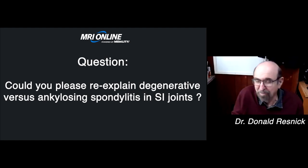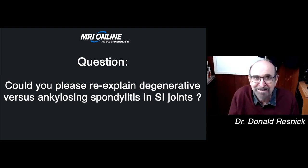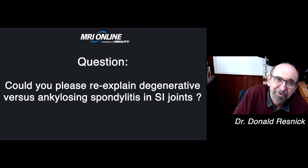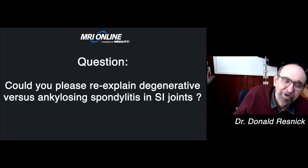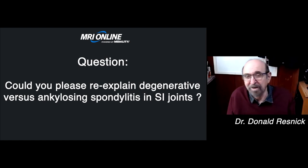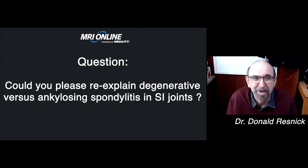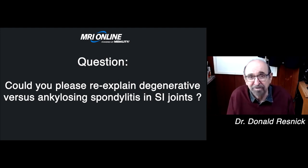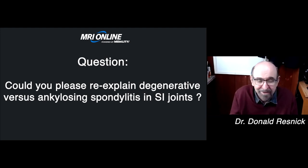I did not talk about osteitis condensans ilii — classically a disease of multiparous women, rarely occurring in men — where you get very well-defined triangular sclerosis on the ileal aspect with little or no sacral involvement. Sometimes you run into a differential with sacroiliitis. And one other point: if you read the recent literature on the value of MR in diagnosing sacroiliitis, you'll see many examples of other diseases that on MR can simulate the sacroiliitis of ankylosing spondylitis. For example, post-pregnancy mechanical changes in the sacroiliac joint on MR can simulate sacroiliitis.